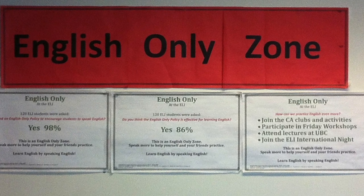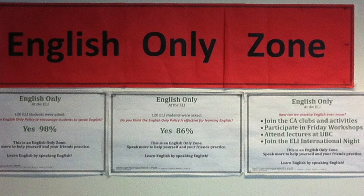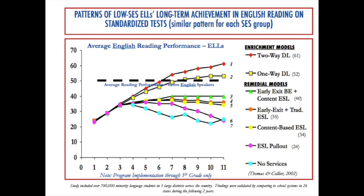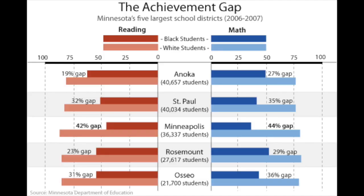In the United States, many people were against bilingual education because they believed it would drop their students' test scores. However, recent studies show that bilingualism increases test scores, helps with grammar, and allows students to be more open-minded about other cultures. Most importantly, bilingual education also helps close the achievement gap.